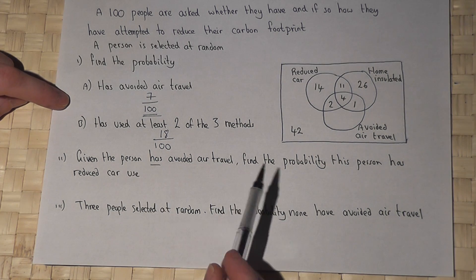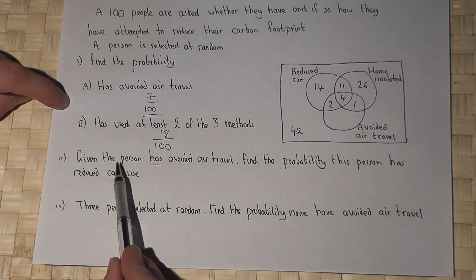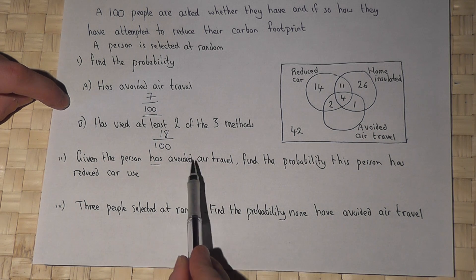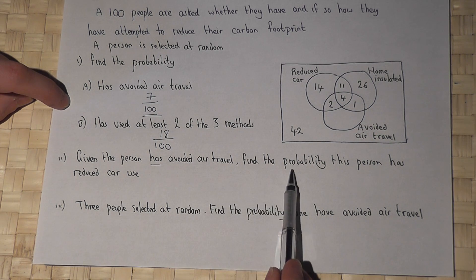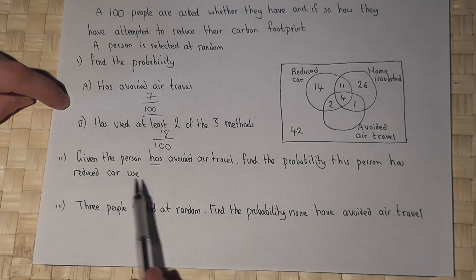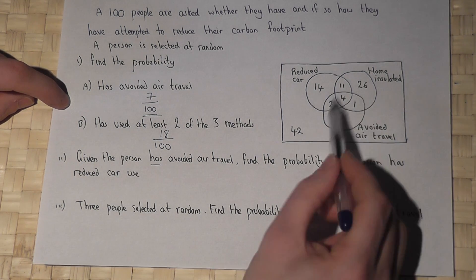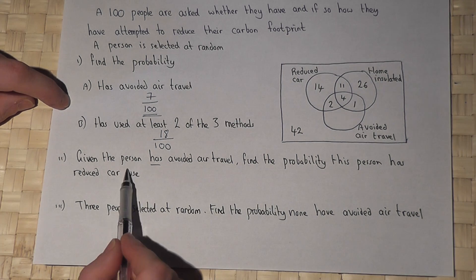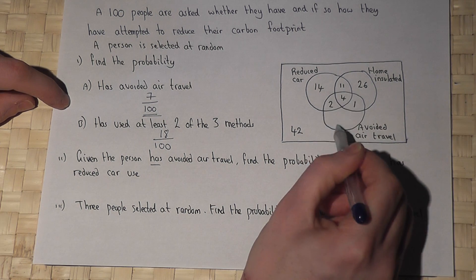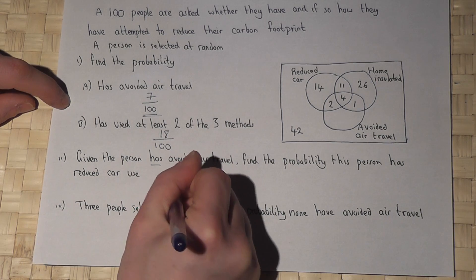Now part two might appear at first glance more complicated. It says given that the person we've chosen at random has avoided air travel, what's the chance that this person has reduced car use? But all this means is let's limit ourselves to the avoided air travel circle. We know this person has avoided air travel in this circle. There are only seven people in this circle, so our answer is out of seven.